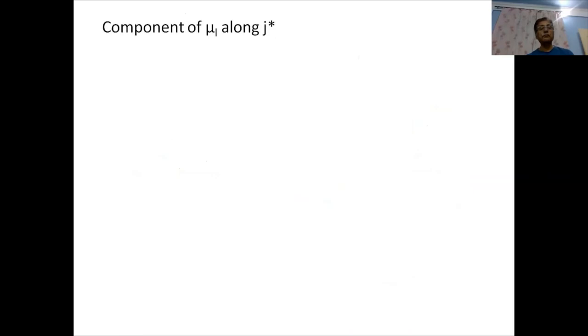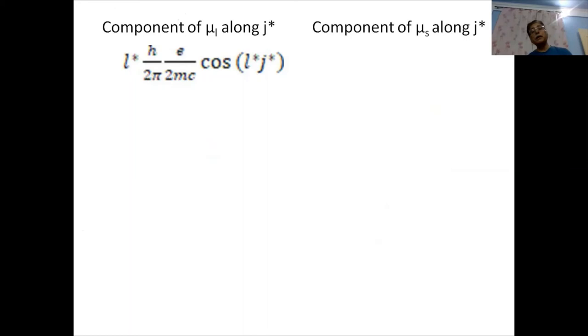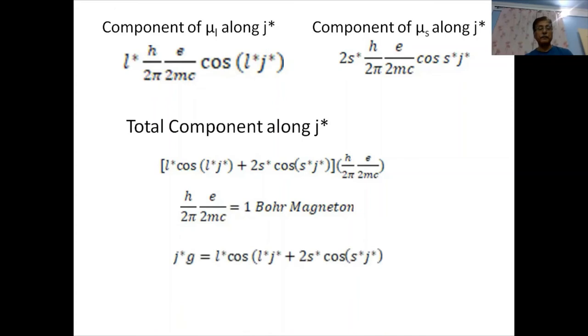The component of μ_L along J* is: (L* h/2π)(e/2mc) cos(L*, J*). Similarly, the component of μ_S along J* is: 2(S* h/2π)(e/2mc) cos(S*, J*). The total component along J* is: [L* cos(L*,J*) + 2S* cos(S*,J*)] × (h/2π)(e/2mc). Since h/(2π) × e/(2mc) equals one Bohr magneton, the bracket is taken equal to J* g. So: J* g = L* cos(L*,J*) + 2S* cos(S*,J*).